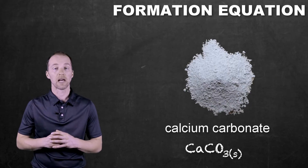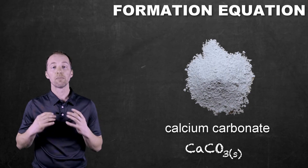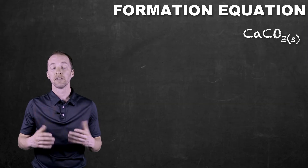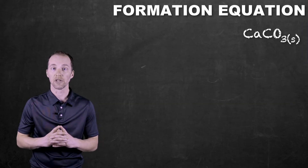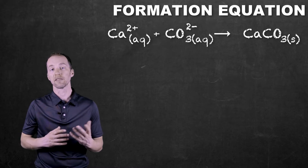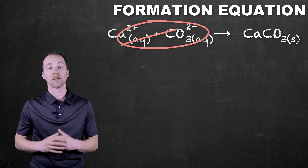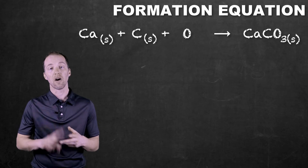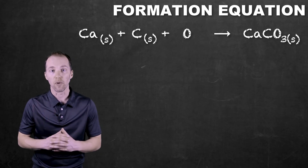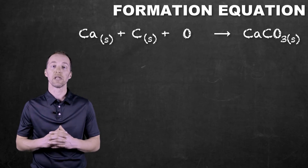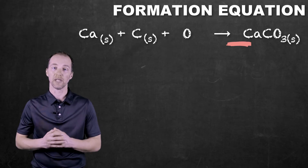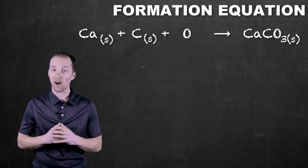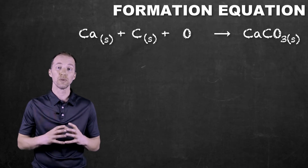The way that a formation equation is put together is we take a particular compound — like calcium carbonate — and we break it up into the elements that make it up. Rather than being a dissociation equation where we break it into calcium ions and carbonate ions, we instead break it up into calcium, carbon, and oxygen.